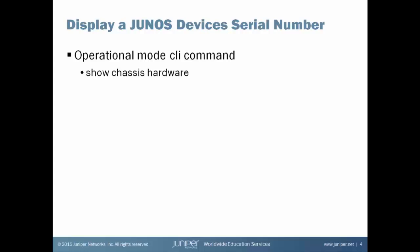The Junos CLI provides an operational mode command, Show Chassis Hardware, that displays information about all of the components in the device. The chassis serial number, along with the serial numbers for all of the individual components in the chassis, is displayed.